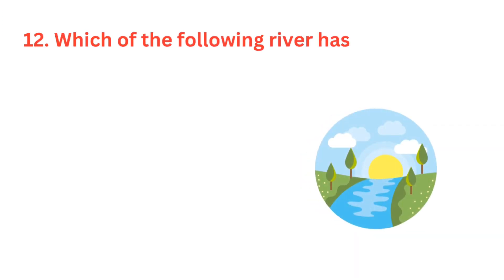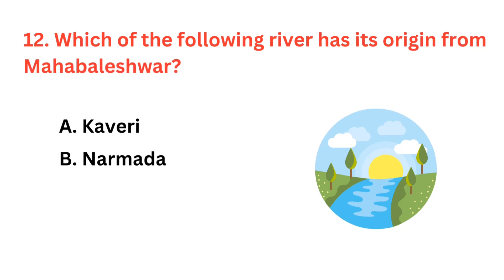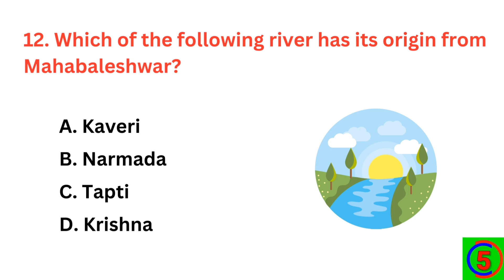Which of the following rivers has its origin from Mahabaleshwar? The correct answer is option D, Krishna.